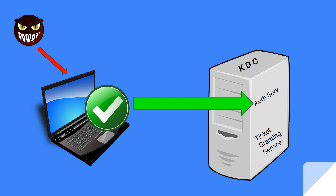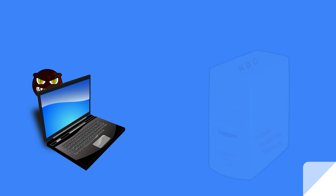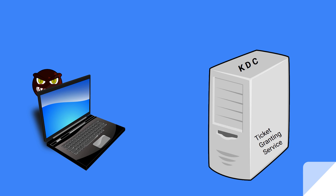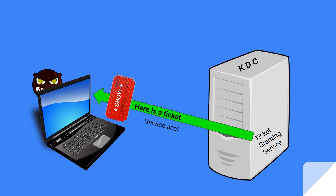The attacker sends a request to the key distribution center's ticket granting service, basically asking for a ticket for a service account. The KDC sends the ticket back to the requester and encrypts it with the password hash of the service account — not the password itself. That's an important distinction.